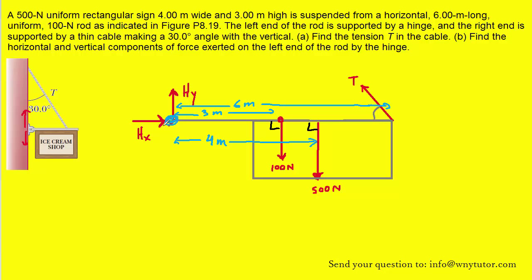So we've labeled that HY and HX, respectively. We've also labeled some of the distances. The entire rod is 6 meters long. The weight of the rod, the 100 newtons, acts at its center, so the distance would be 3 meters from the left end to the right end. We've also labeled the distance from the left end of the rod to the ice cream shop weight force as 4 meters.